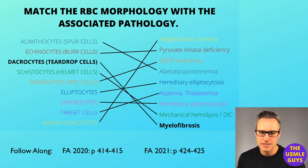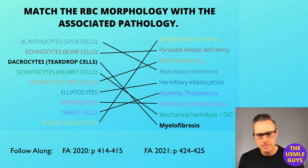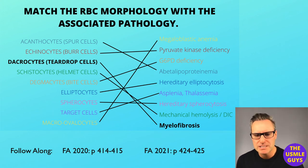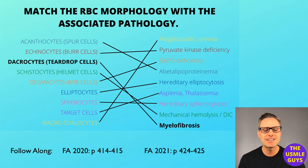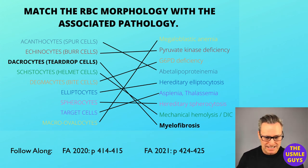Then we have macroovalocytes, which are found in megaloblastic anemia. When it comes to megaloblastic anemia, please be on the lookout for those hypersegmented neutrophils. Target cells are the final RBC morphology to be aware of here — they just look like bullseyes, and can be seen in cases of asplenia, liver disease, thalassemia, as well as HbC disease.